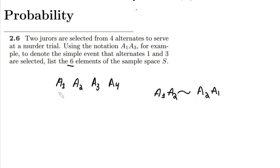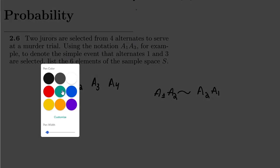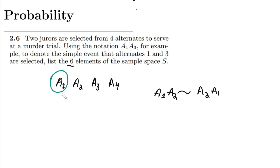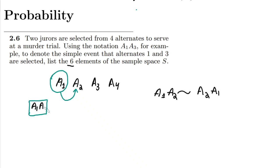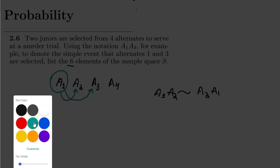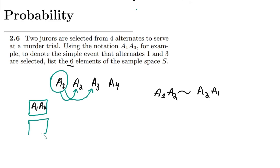So let me start with the first juror, a1. I'll combine a1 with a2 first, giving me a1 a2. Then the combination of a1 with a3 gives a1 a3. And after that, its combination with the fourth one gives a1 a4.